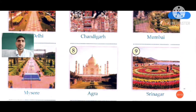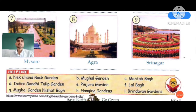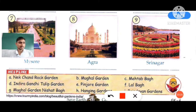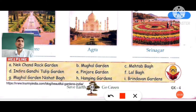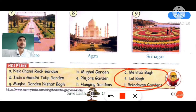Number seven is also very famous — it is in Mysore. The right answer to choose from the help box is option I. This garden is known as Brindavan Garden.